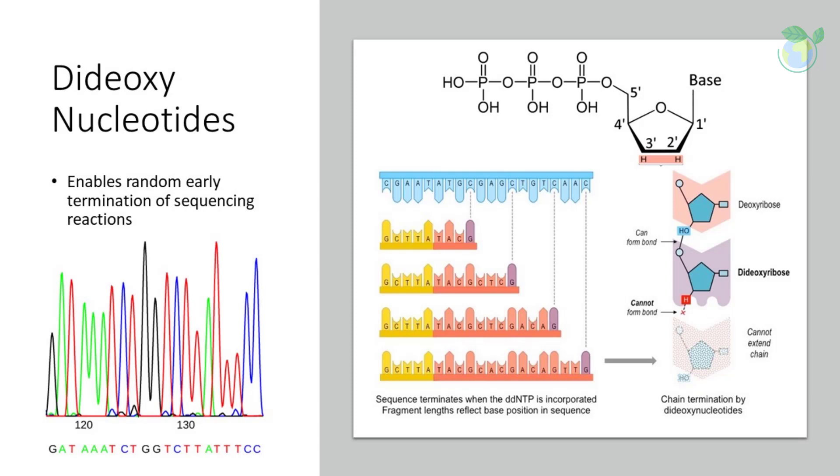When visualized with gel electrophoresis, the fragments were sorted by length, allowing the DNA sequence to be read off base by base. This technique was groundbreaking and enabled sequencing of 500-1000 BP fragments. However, the original method used radioactive DDNTPs and X-rays, making it impractical for widespread use.